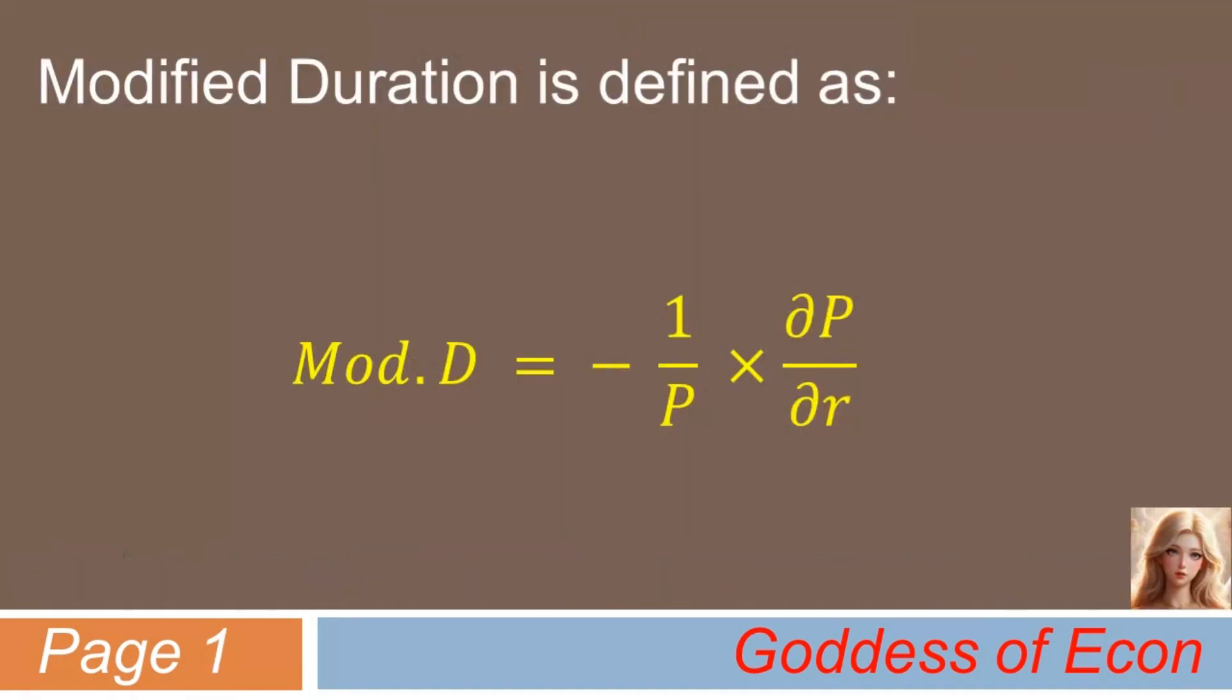As can be seen here, the modified duration of a bond is defined as negative 1 over p times partial derivative of p with respect to r. This is a calculus version of the basic definition of modified duration. The partial derivative means a ratio of a change in price over an infinitesimal change in yield. With this in mind, let's begin our journey.